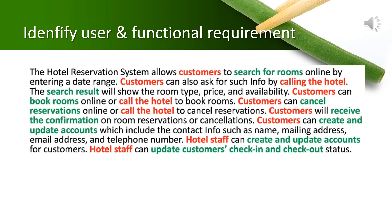To make things clearer, let's focus on the first paragraph of the case study. The red color represents the system's users — the people who will interact with the hotel information system. From the first paragraph, the users are customers and hotel staff. We notice that customers will use the system to search for rooms, view search results, book or reserve rooms, and cancel reservations. Customers will also receive confirmation and create or update their account. Meanwhile, hotel staff can update customer check-in and checkout status.